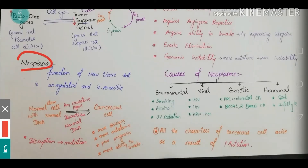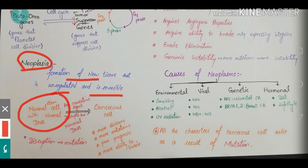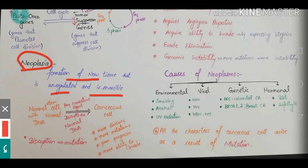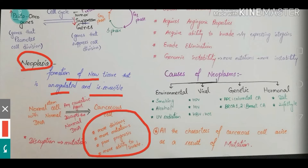Neoplasia or carcinoma is defined as the formation of new tissue that is unregulated and irreversible. Whenever a normal stem cell divides it has normal DNA, but if the DNA of the stem cell gets disrupted, it will form a cancerous cell. Disruption means mutation, and more divisions lead to more mutation, worse prognosis, and greater ability to invade. These are the basic principles — carcinoma is one of the most important and most common pathologies.